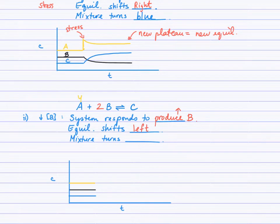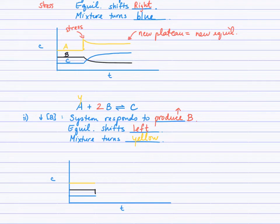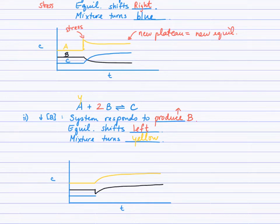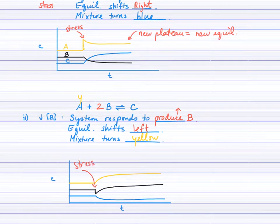A was yellow, B was colorless, and C was blue, so the mixture becomes more yellow. On the CT graph, we first illustrate the stress: B was colorless and the stress was to decrease B, so we drop B down instantaneously. The response is to produce more B, so A and B increase to a new plateau, and C decreases to a new plateau. The stress is shown as an instantaneous drop, followed by the response and new equilibrium.